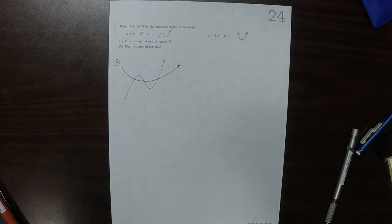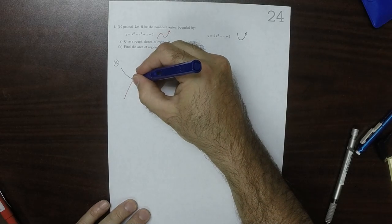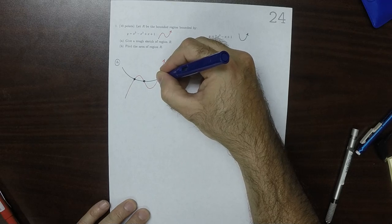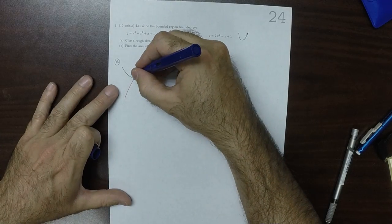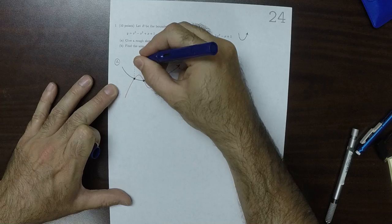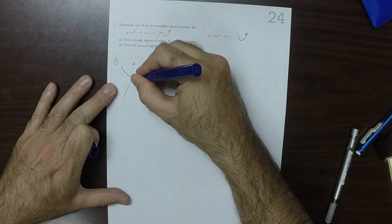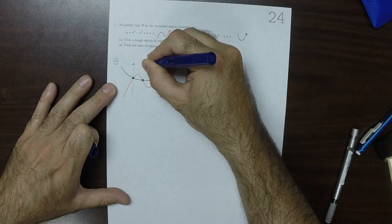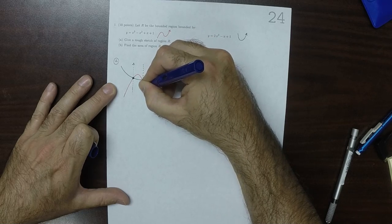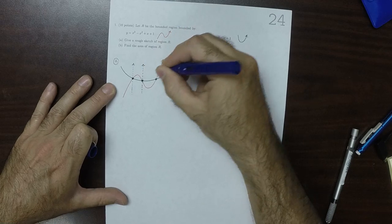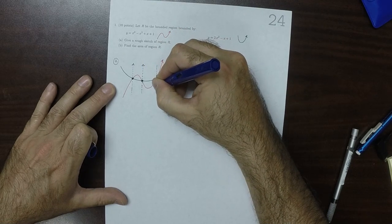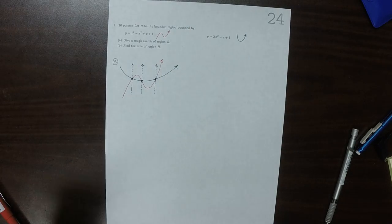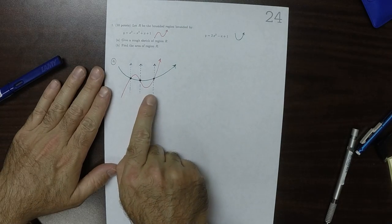So our expectation, and we'll have to verify it with algebra, is that there will be three intersections. And what we need to do to complete the sketch is figure out, where are there really three intersections and where are they? So we want to know the x values of those three.